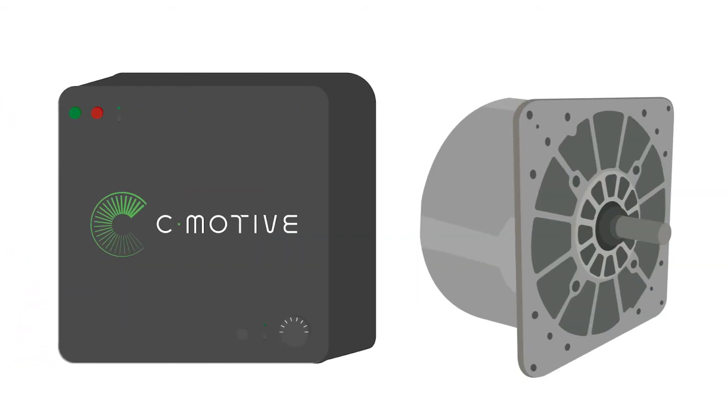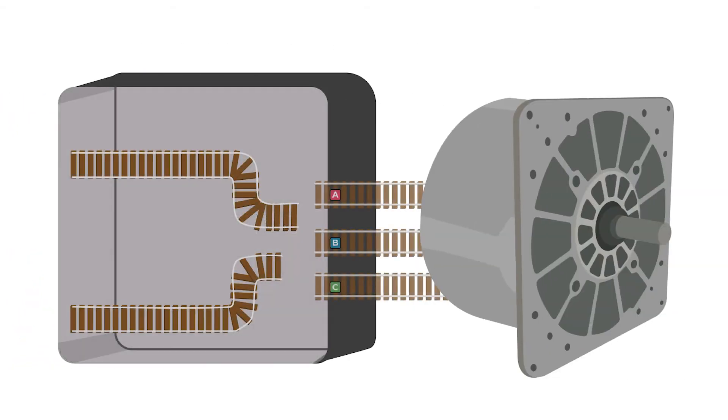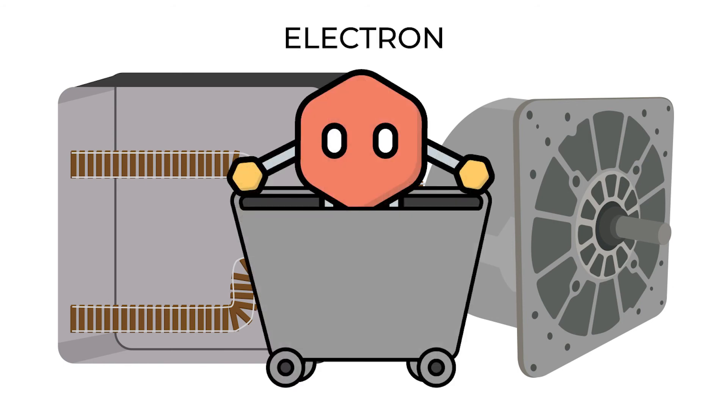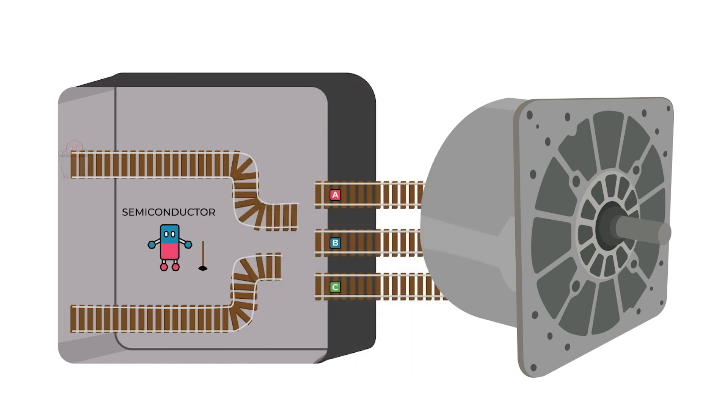To make this a bit simpler, imagine a small track inside the drive with carts carrying electrons. During the inversion stage, the semiconductors are tasked with switching the tracks and creating the three-phase sine waves necessary for the motor to function.